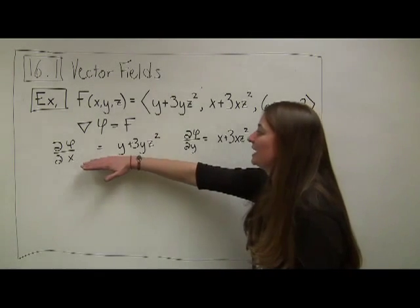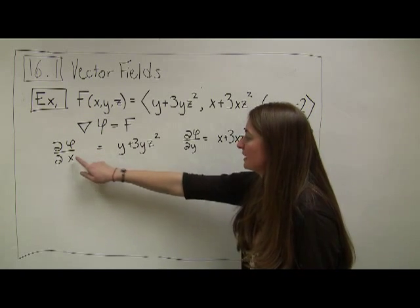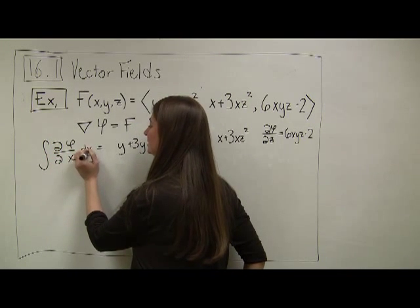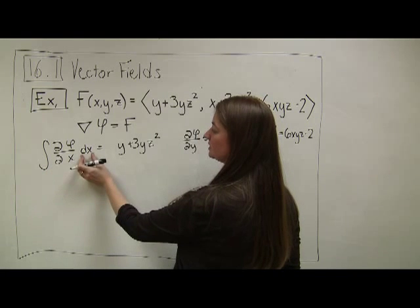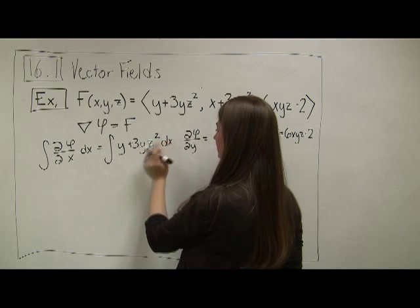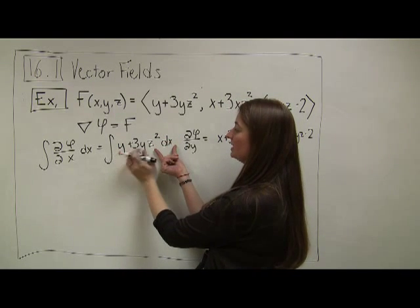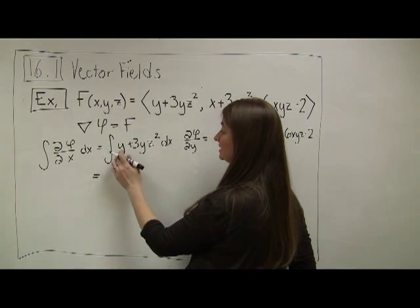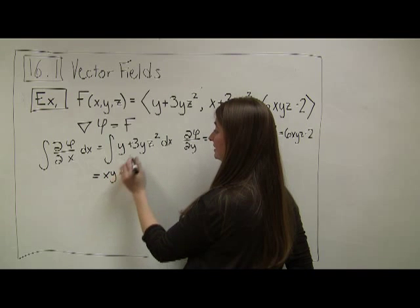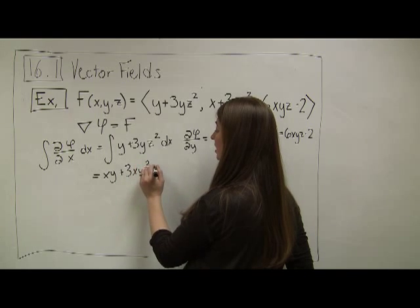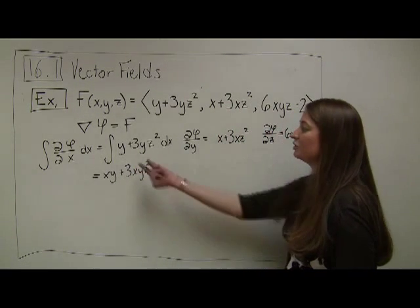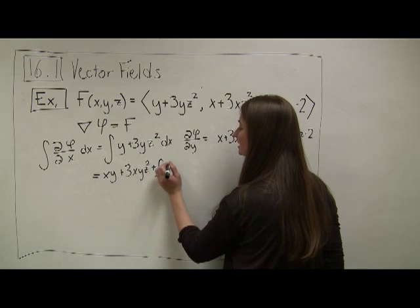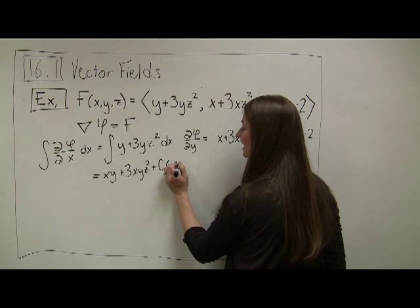Working backwards means we're anti-differentiating. If I know my partial with respect to x equals y plus 3yz², I take the integral with respect to x, treating y's and z's as constants. I end up with xy plus 3xyz², plus a constant that could include a function of both y and z. This is my first guess φ₁.